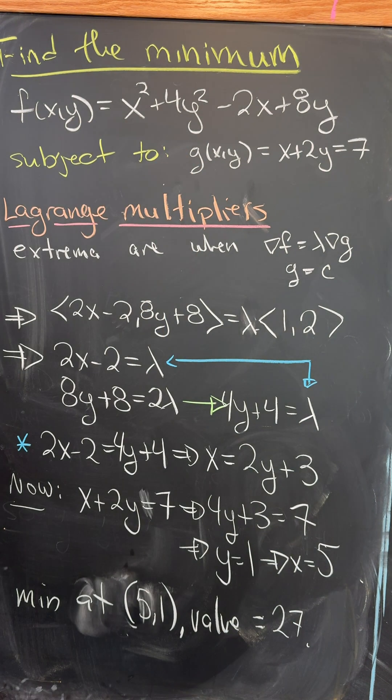Let's find the minimum of the function f(x,y) = x² + 4y² - 2x + 8y subject to the condition x + 2y = 7.